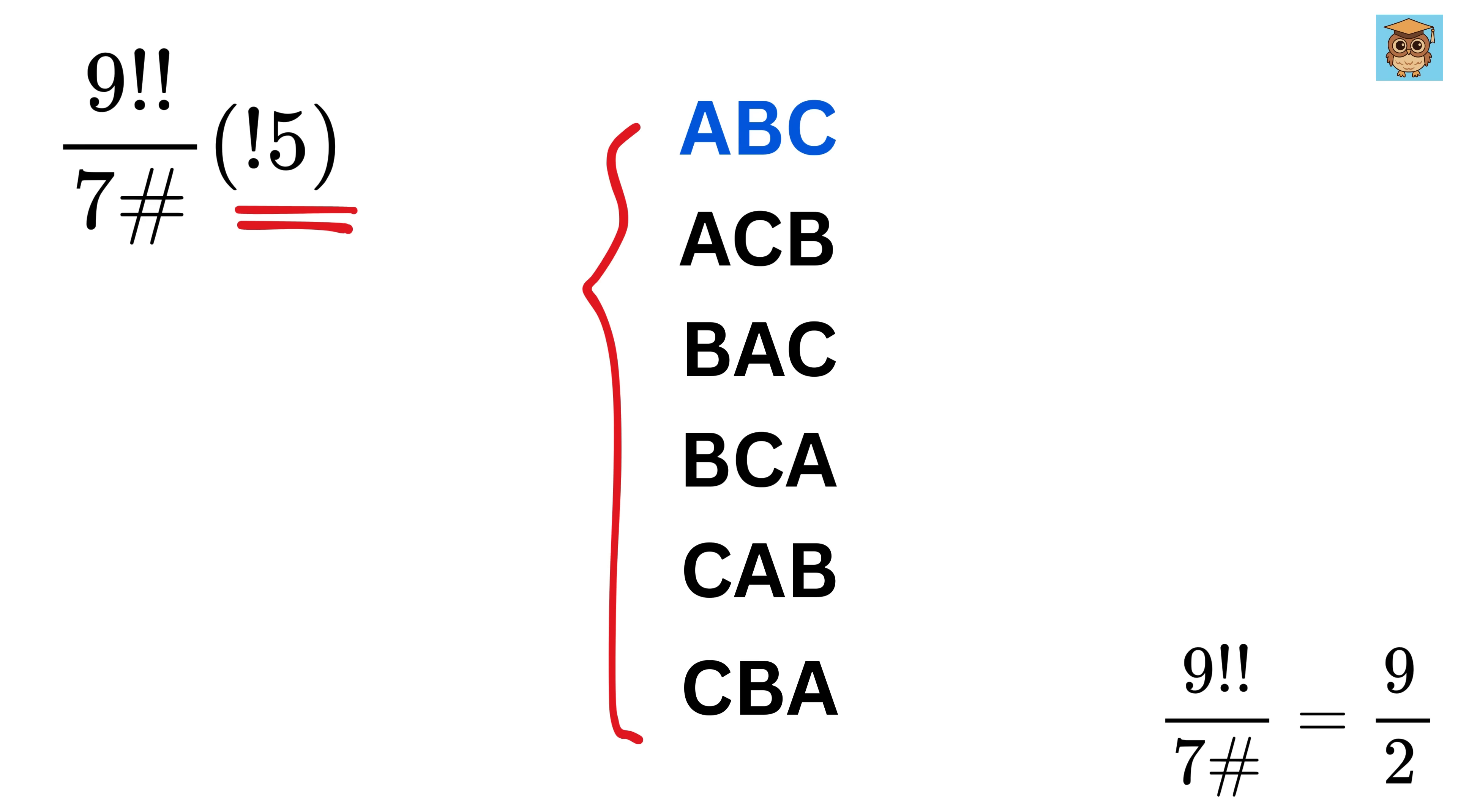Now, from these 6 possible arrangements, remove all the A from the first position, which means this and this will get cancelled out. Now, remove all the B from the second position, which means this and this will get cancelled out. Now, remove all the C from the third position, which means this and this will get cancelled out.